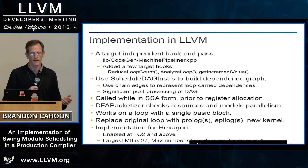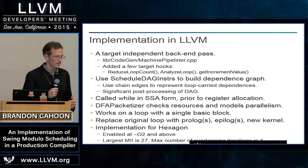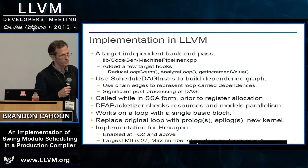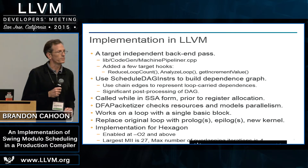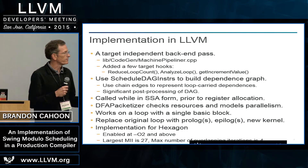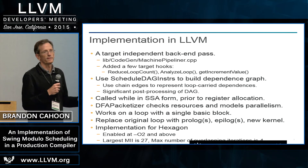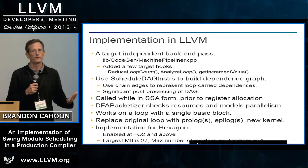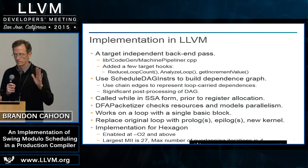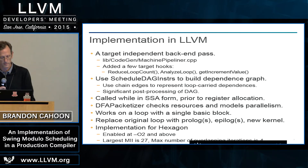We've implemented this for Hexagon. It's enabled in our compiler at O2 and above, and we allow for some pretty large loops. The maximum amount of overlapping iterations we allow right now is four. These are just command-line options that you can change as well.